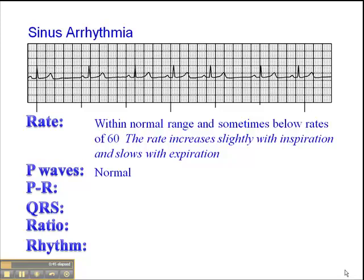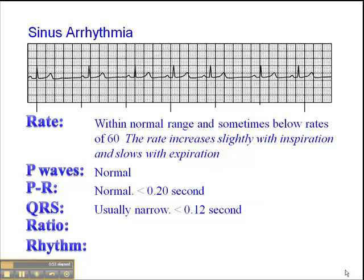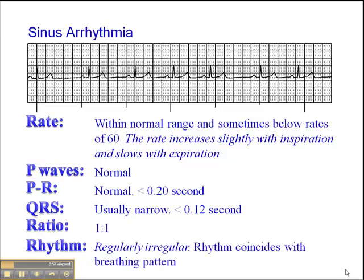The P waves are typically normal. The PR interval will be normal at less than 0.20 second. The QRS is usually narrow, less than 0.12 second. The ratio will be 1 to 1, and the rhythm is typically regular to irregular.